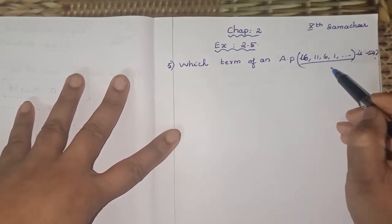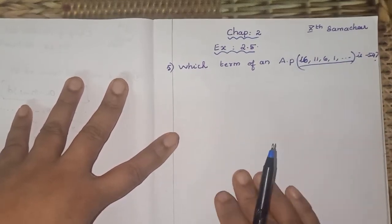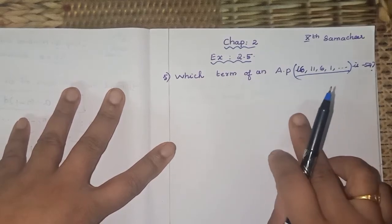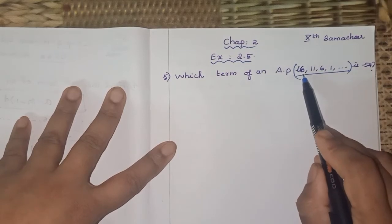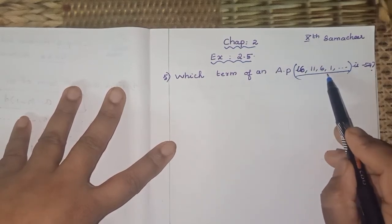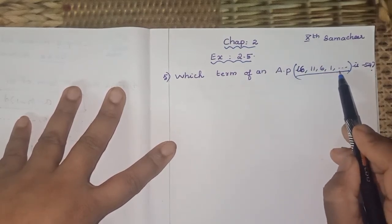Which term of this AP is minus 54? So it goes on - the first term 16, second term 11, third term 6, fourth term 1, like that.